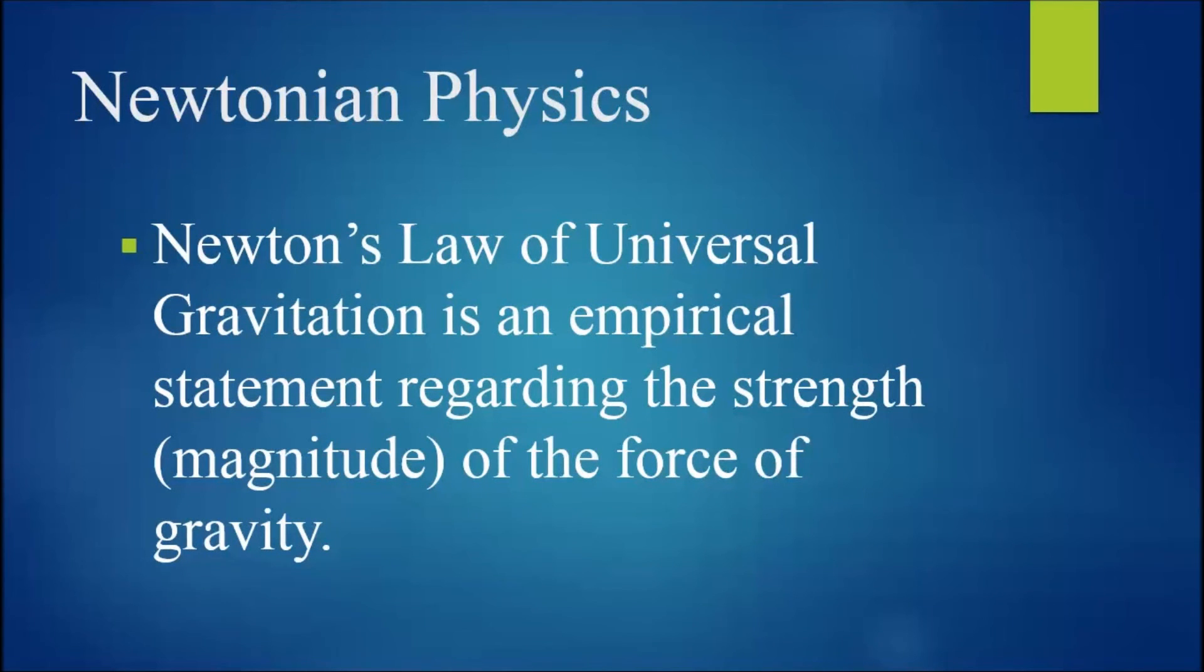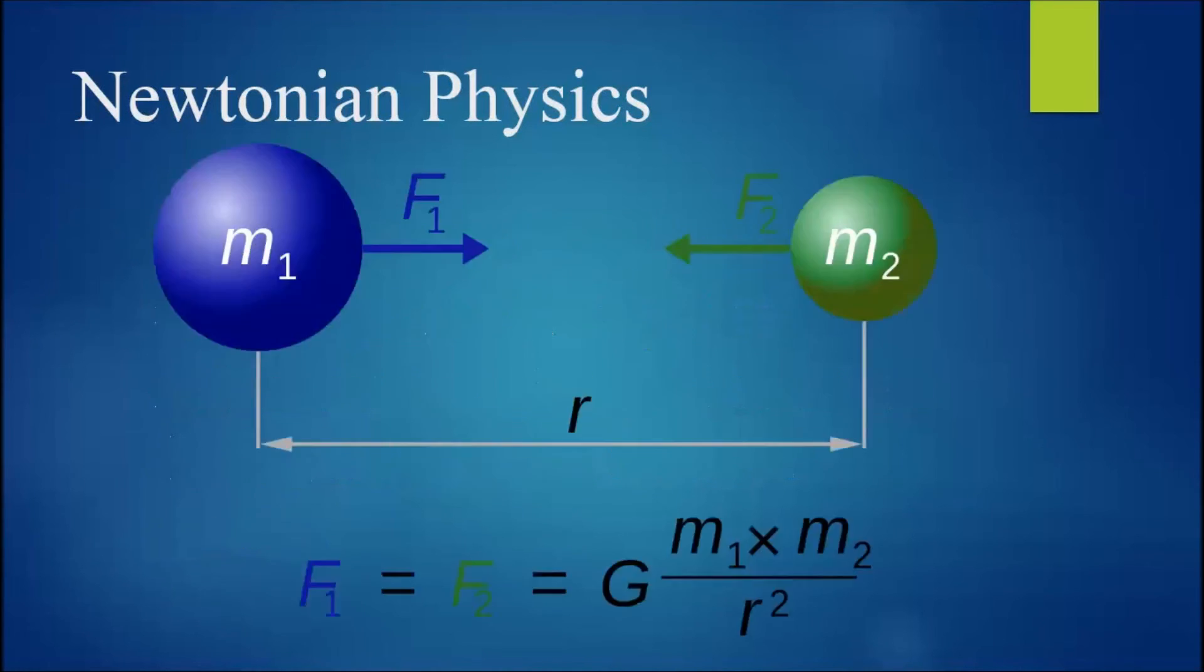Newton's law of universal gravitation is an empirical statement regarding the strength or magnitude of the force of gravity. Newton's law of universal gravitation states that the strength or magnitude of the gravitational force between two objects with mass m1 and m2 is directly proportional to the product of those masses and is inversely proportional to the square of the distance r between the centers of mass of those objects and that the force of gravity acts on a line connecting the centers of mass of those objects. However, the law does not explain how gravity arises.